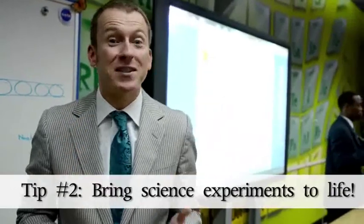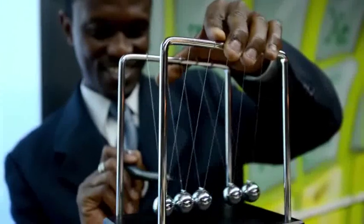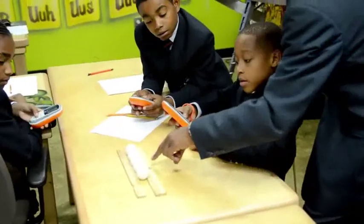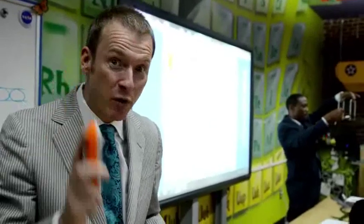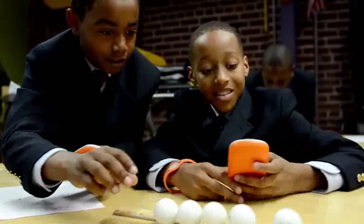Tip number two: use the active expression to bring science experiments to life. Our wonderful teacher at RCA is Mr. Townsville and he does a great job of getting the kids involved with hands-on experiments. What he'll do is give a brief introduction to the experiment and then he allows the active expression to do the rest of the work. He's already gone into the real-time program and entered all the steps of the experiment. When he finishes the introduction, the students receive their very first step on the active expression. It's a great way for the kids to finish the experiment, for them to work together, and for Mr. Townsville to be able to see how well the students are achieving and which groups may need some help and which groups are right on target.